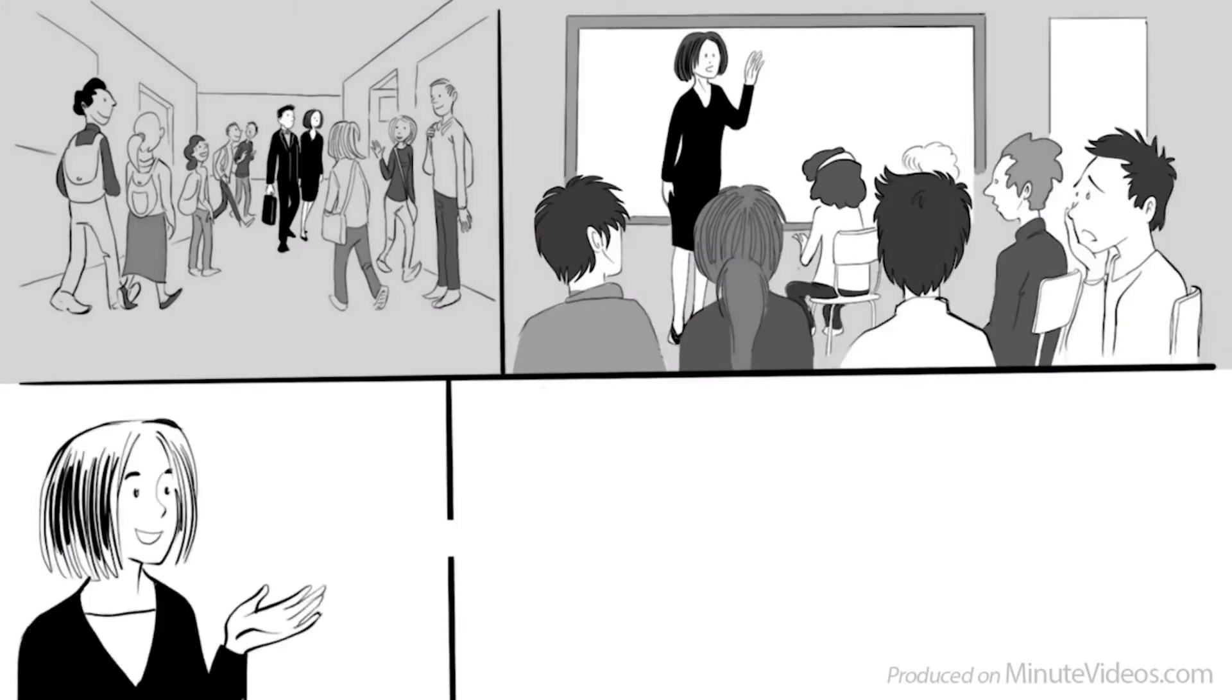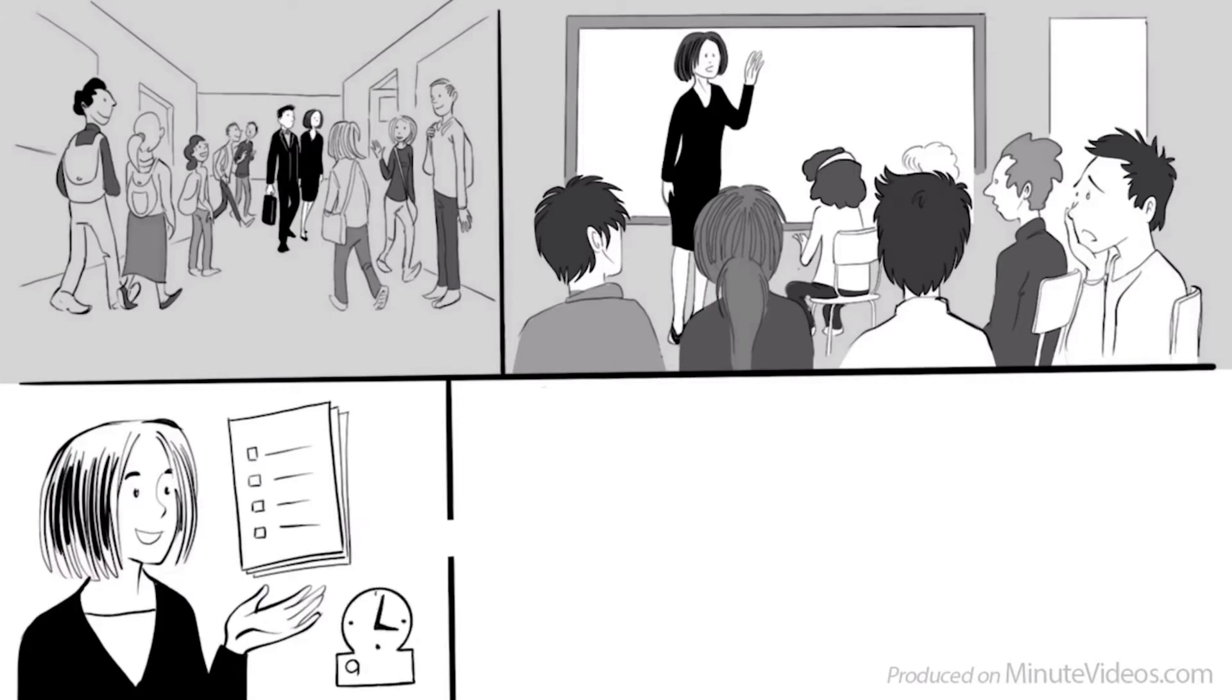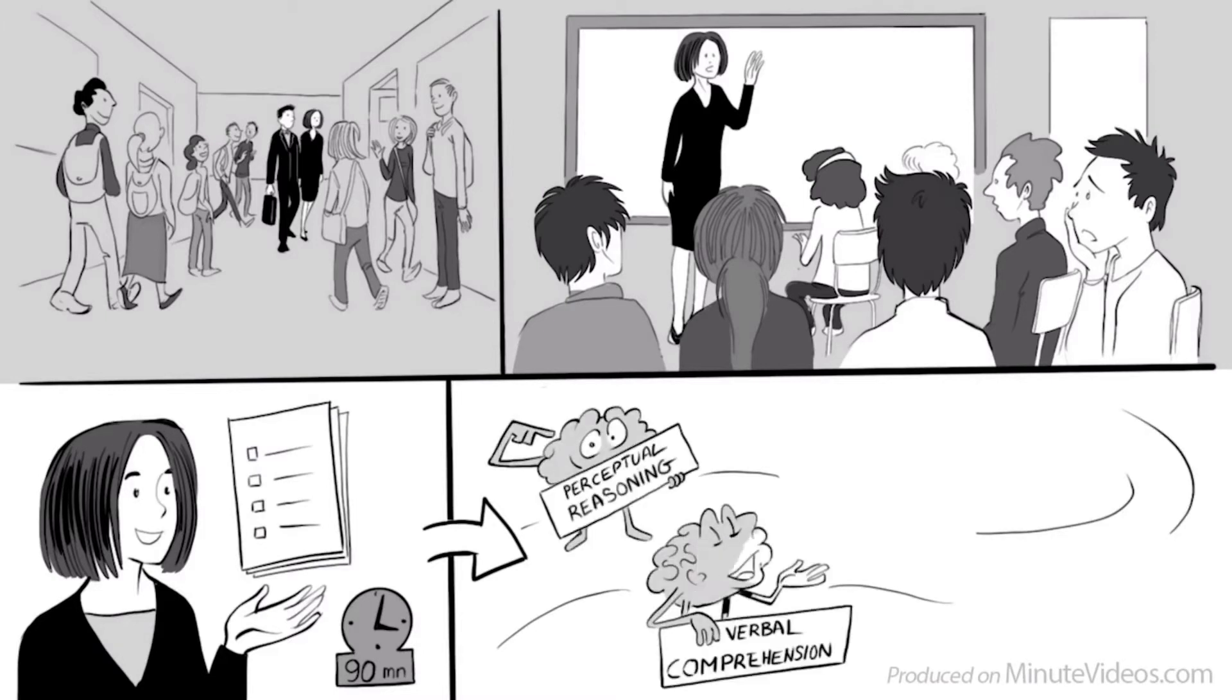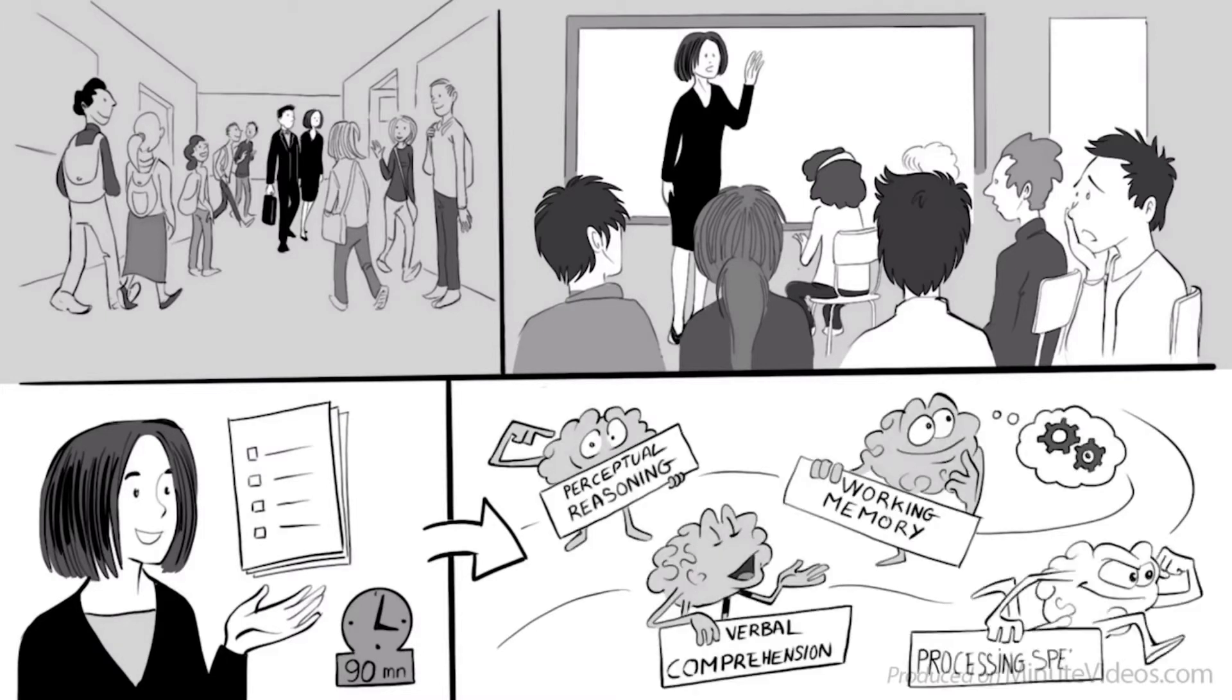Then, one woman started speaking. She told us that we are now going to take a test, and just one week later, we all get the results with some specific ideas about our future career path. She said it takes only 90 minutes and measures our intelligence in the following four areas: perceptual reasoning, verbal comprehension, working memory, and processing speed.